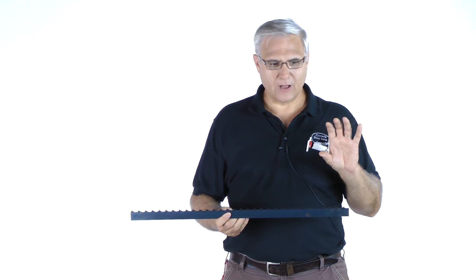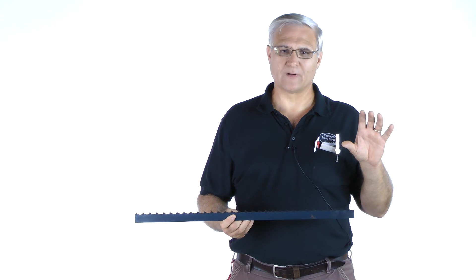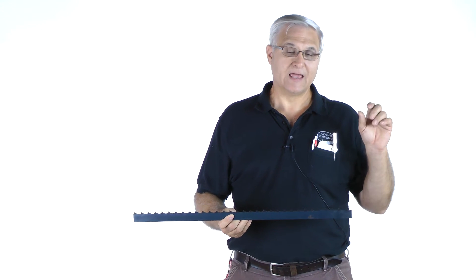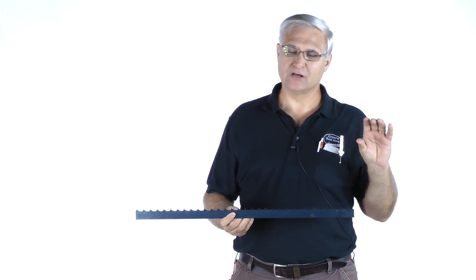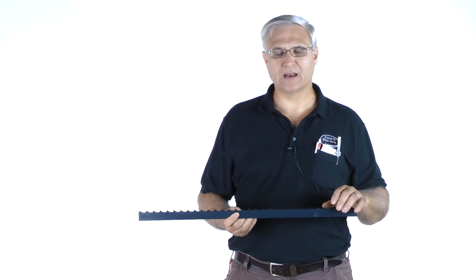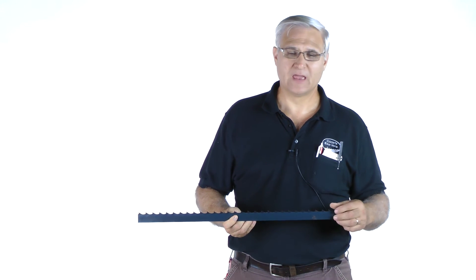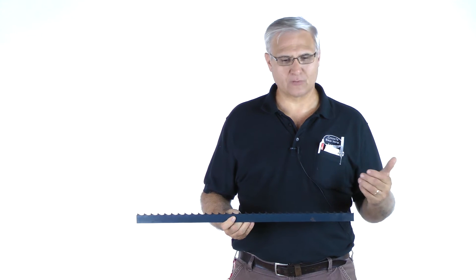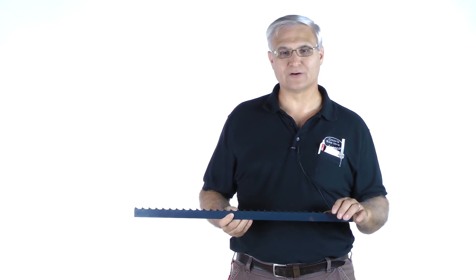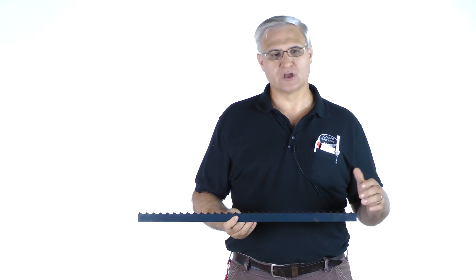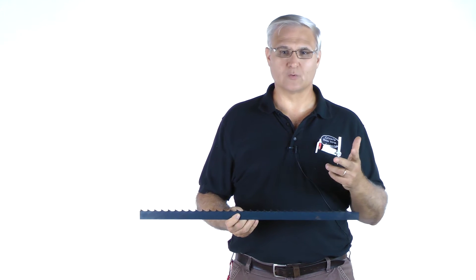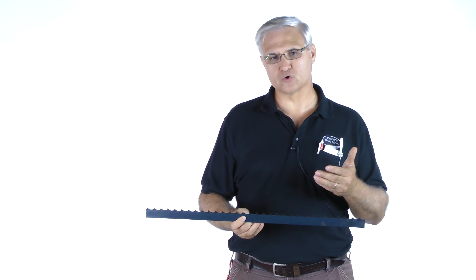But when you get above the 30-35 horsepower range, then we like to see in the inch and a half blade and up to the two inch blade, we like to go to that one inch tooth spacing. You can look at it sometimes on hardness of wood, you can use a little wider tooth spacing. But in general, the one inch and the seven eighths is what you're looking at. And it has to do with the horsepower.